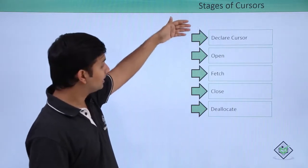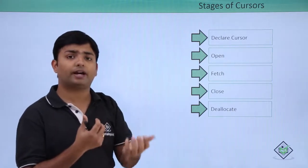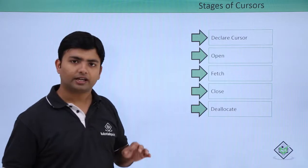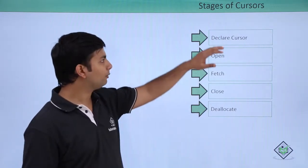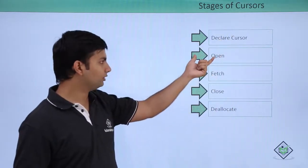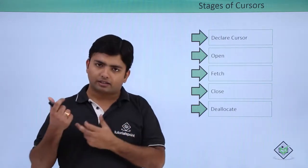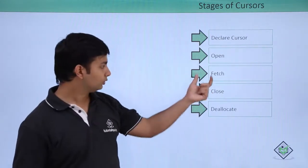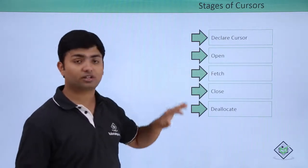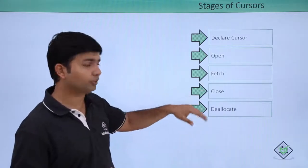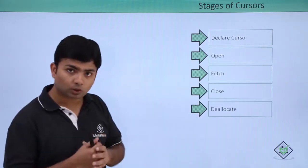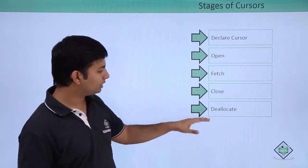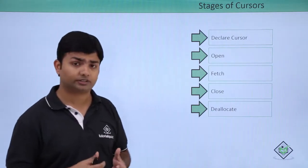There are a number of stages in the cursor lifecycle. First is Declare — when we declare a cursor, we bind a SELECT statement with it. It is declared like a variable, not created as a database object. Next is Open — when the open stage occurs, the SELECT statement is executed internally and the result set is generated. Fetch means you start pointing through records one by one, iteratively, since there could be many records. Then Close — the cursor will no longer be available for fetching. Finally, Deallocate — all resources occupied by the cursor will be released.